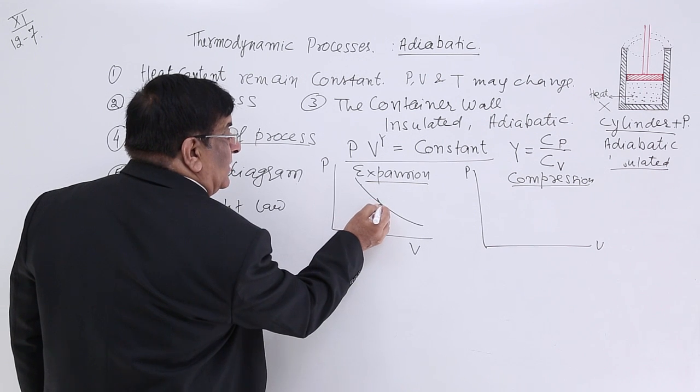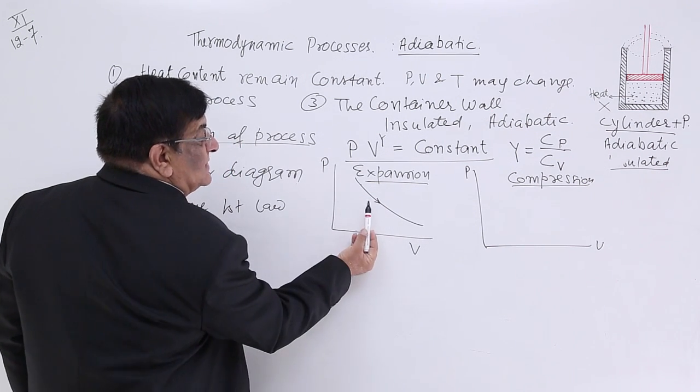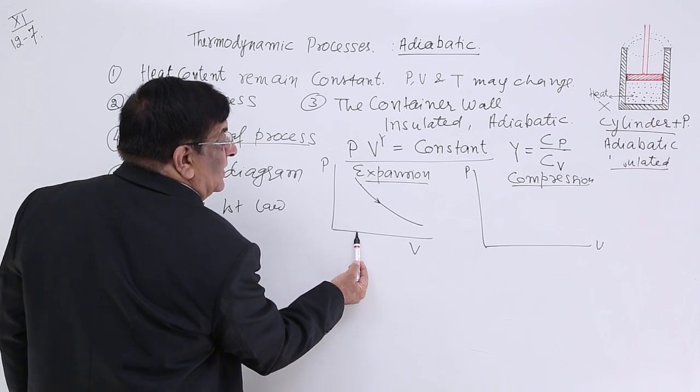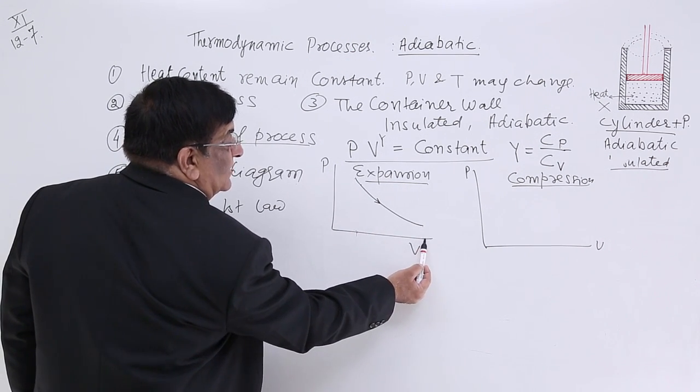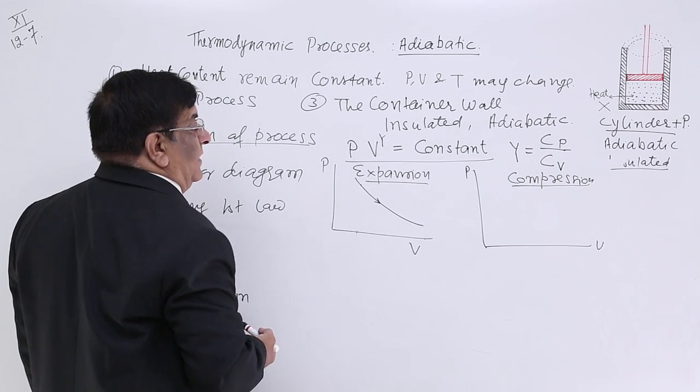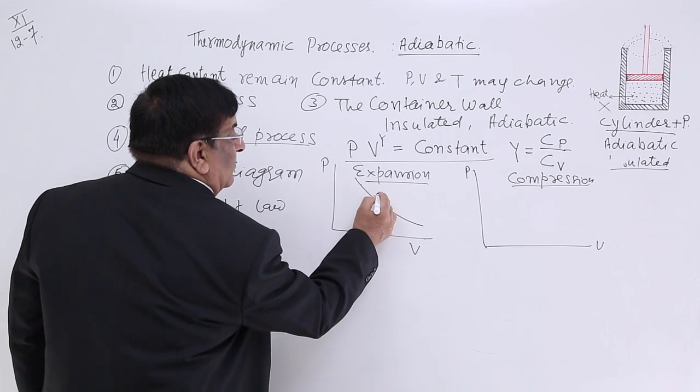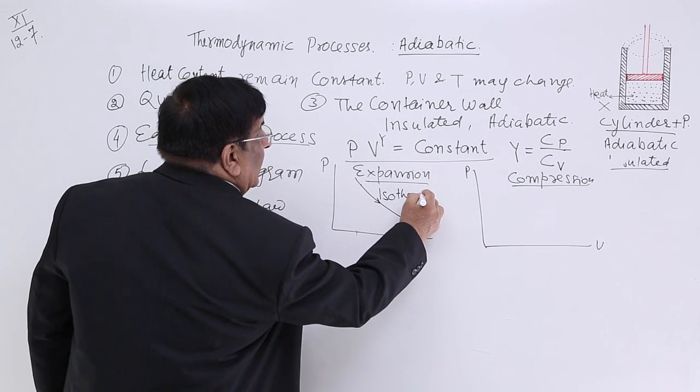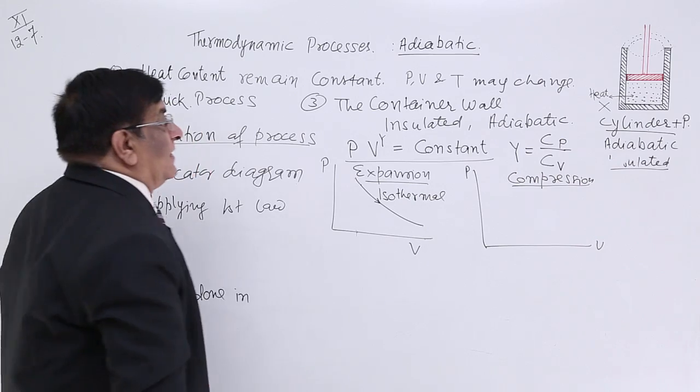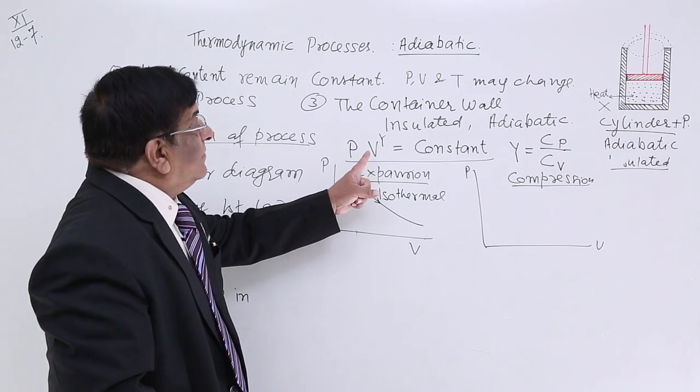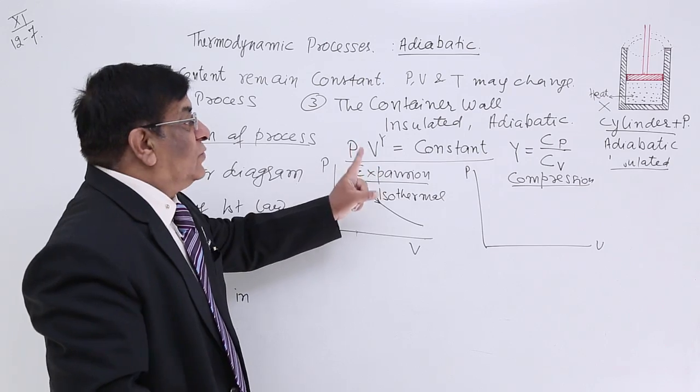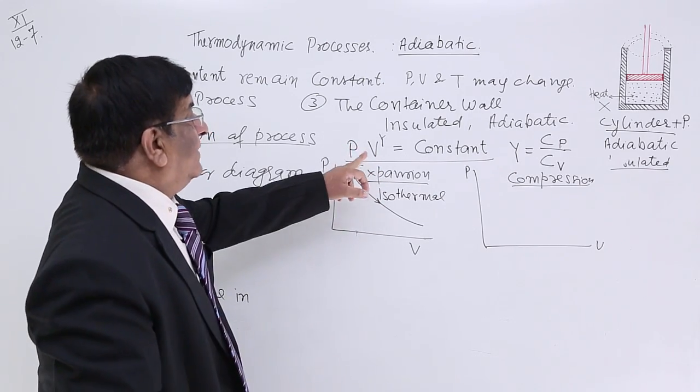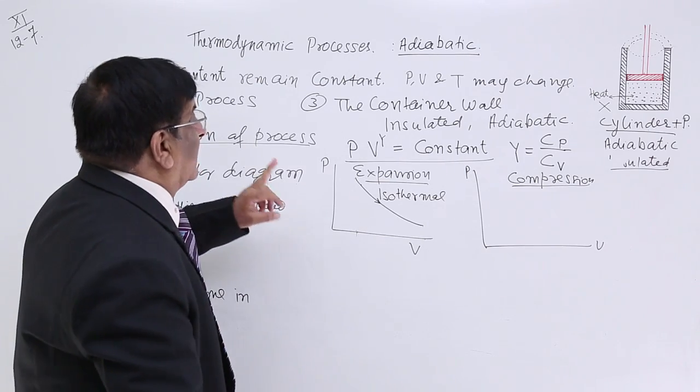But, how to show it? We will put arrow here. This arrow shows the process start from smaller volume and it has gone to the larger volume. This is expansion isothermal. Now, how it will be for adiabatic? Here, we find that volume has a power which is more than one. So, volume decrease very sharply. Volume decrease very sharply in isothermal.